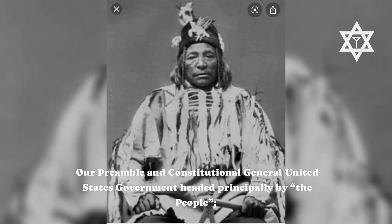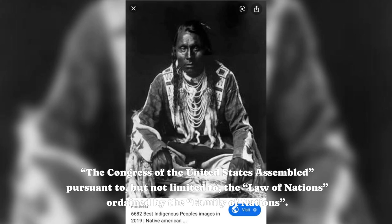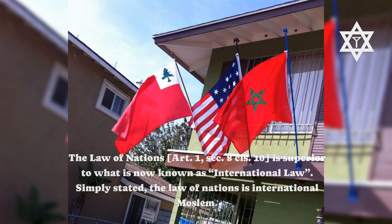Our preamble and constitutional general United States government, headed principally by the people — the Congress of the United States, not to be confused with the U.S. Congress — is authorized by and a continuation of the United States in general congress assembled, aka the Congress of the United States assembled, pursuant to but not limited to the law of nations ordained by the family of nations. The law of nations, Art. 1 Sec. 8 Cls. 10, is superior to what is now known as international law.